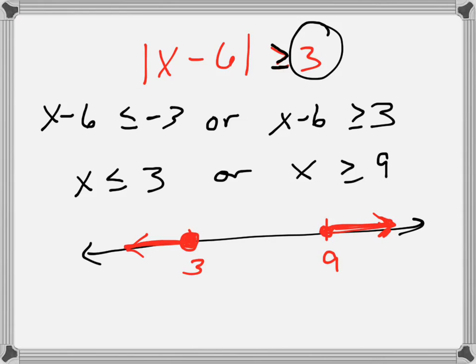There's your solution. To write it in set builder notation, it's all X such that X is less than or equal to 3, or X is greater than or equal to 9.